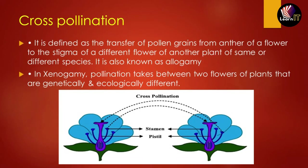Cross-pollination is just the opposite of self-pollination. It is the transfer of pollen grains from the anther of a flower to the stigma of a different flower on another plant of the same or different species. This is also known as allogamy.